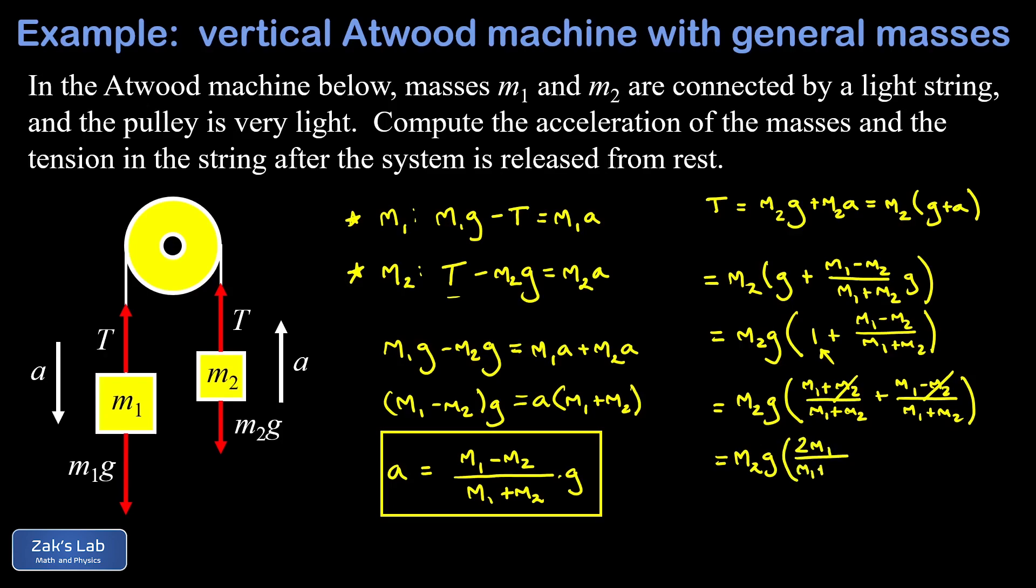Just cleaning it up a little bit more we can write the tension as two m1 m2 g divided by m1 plus m2. Now I can think of one test to figure out whether or not this formula makes sense. I can imagine what if m1 and m2 are actually equal.